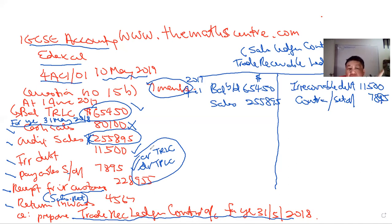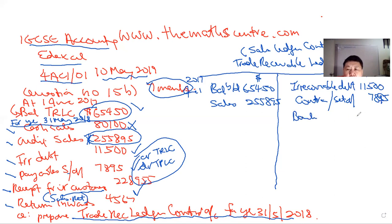Receipts from credit customers is good news — money is in our bank. We debit our bank and credit the TRLC here. Write 'bank' or 'bank book': 228,955. Some books call it bank book, some just call it bank — bank is fine.